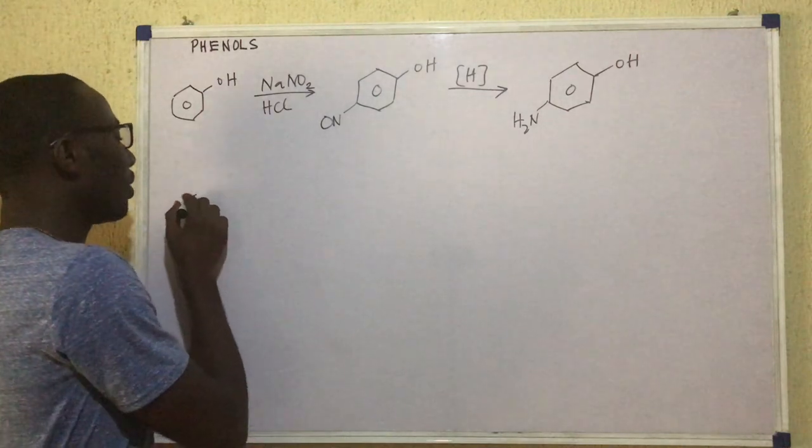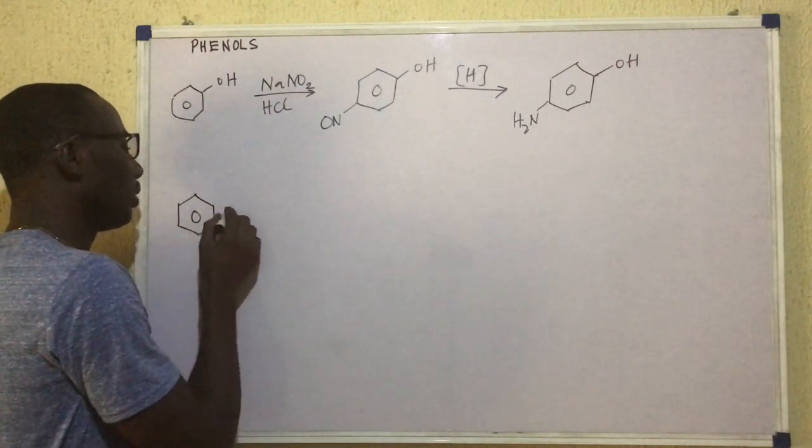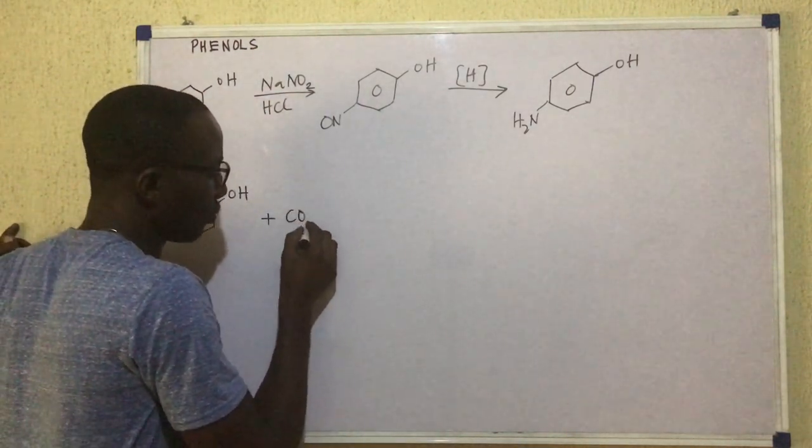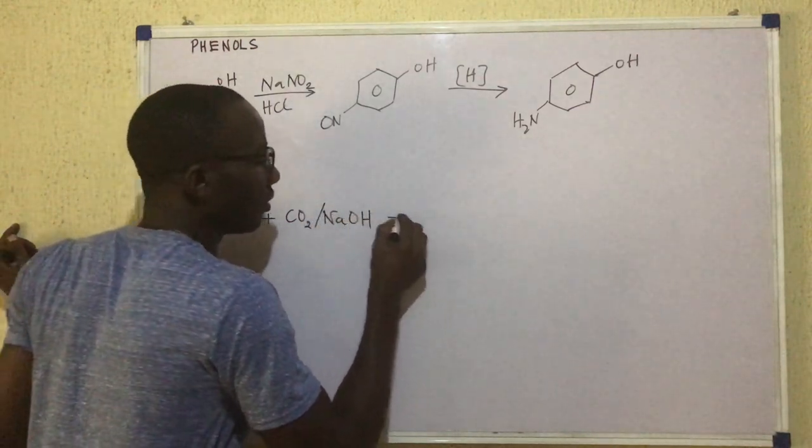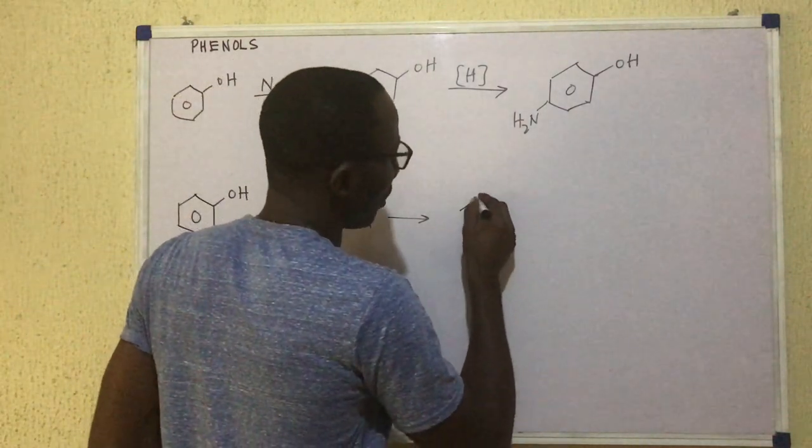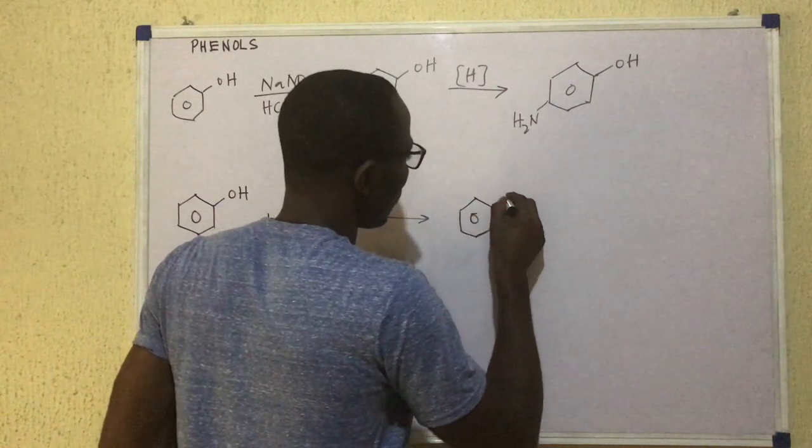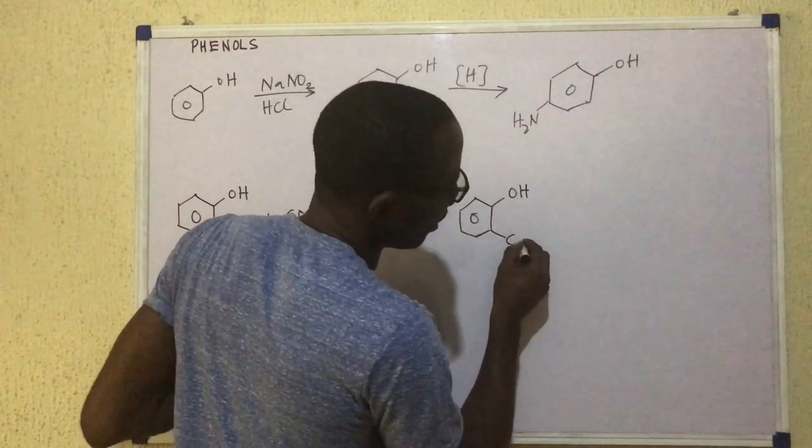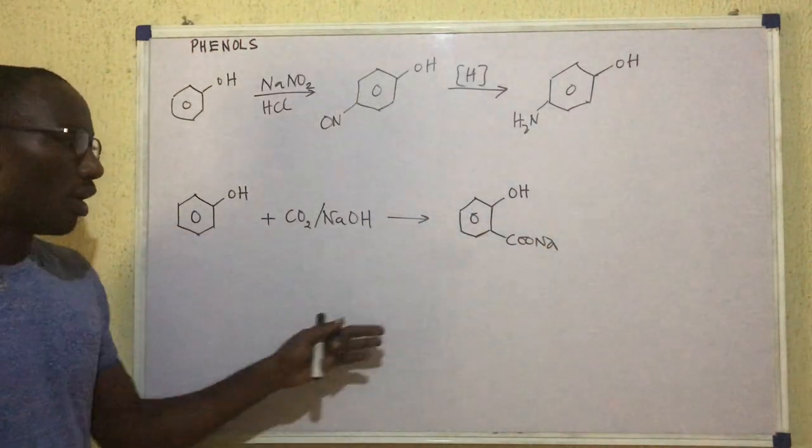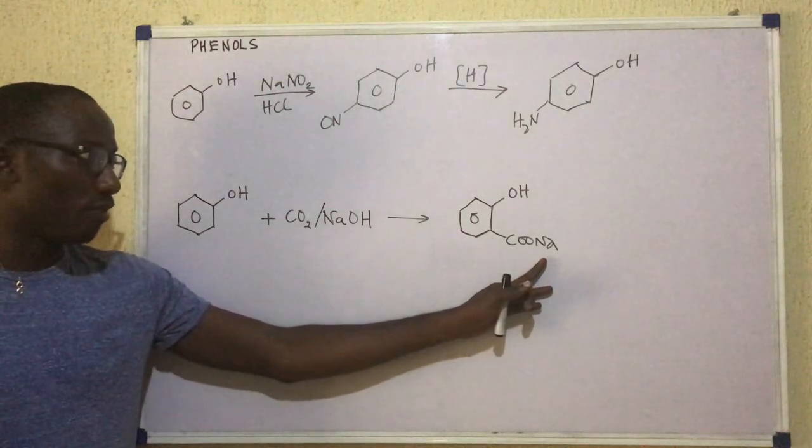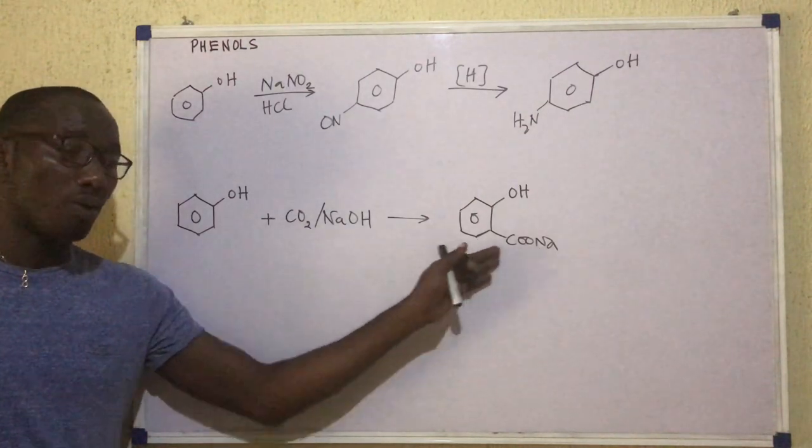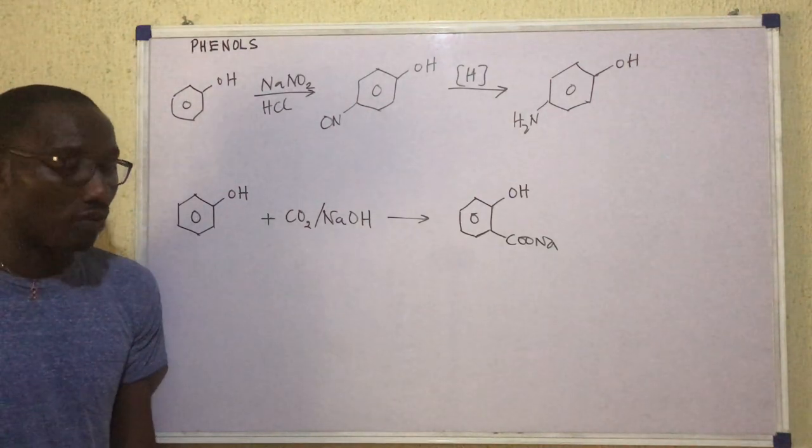Now, it is possible for this phenol OH there to react with CO2 and NaOH. Now, in this case, it's reacting with sodium hydroxide as well as CO2 and our product will be something like this. This is OH and then this is COONa. See what has happened there. An alkanoate has been formed. So we have a hydroxy group, but this becomes the main functional group now.